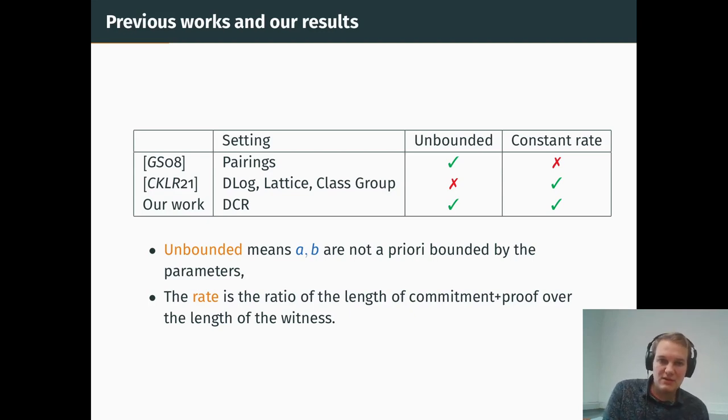The unboundedness property means that the CRS used to commit to the integer x does not bound the values a and b, and the rate, which we want constant, is the ratio of everything you send to the verifier over the length of your witness, your witness being the integer you've committed to.